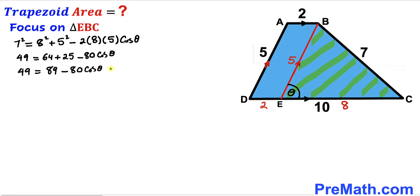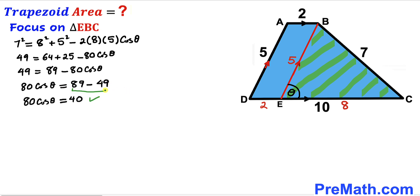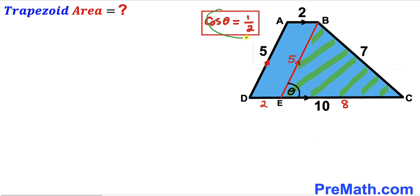Moving −80 cos θ to the opposite side and 49 to the other side, we get: 80 cos θ = 89 − 49. So 80 cos θ = 40. Dividing both sides by 80 to isolate cos θ, we find that cos θ = 40/80 = 1/2.